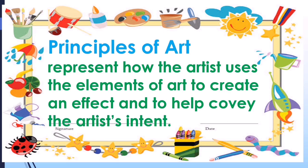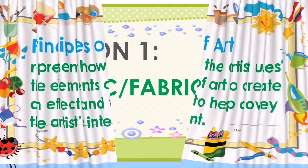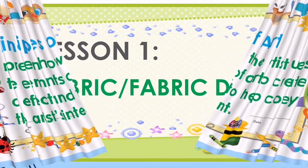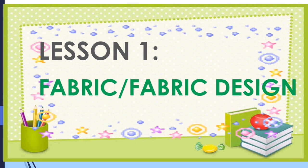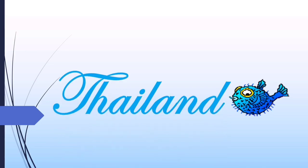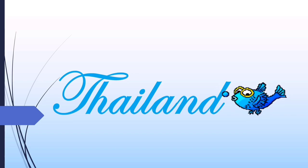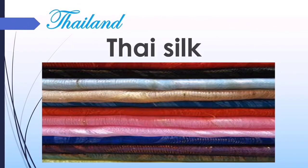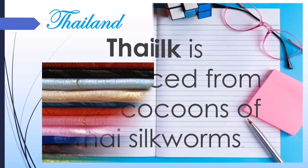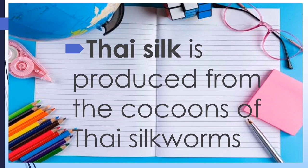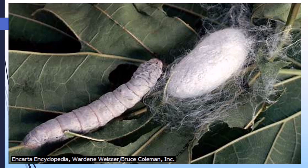Let us start with the country Thailand. Their fabric is called Thai silk. Thai silk is produced from the cocoons of the Thai silkworms.